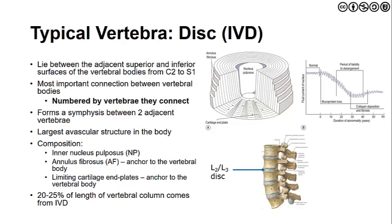The intervertebral disc is composed of the inner nucleus pulposus, a gelatinous material at the center. Working outward toward the periphery we find the annulus fibrosus — the annular fibers that anchor the disc to the vertebral body. These fibers lie at perpendicular right angles to one another from one layer to the next, which helps resist shear force and twisting, creating integrity to withstand the forces the intervertebral disc typically experiences.